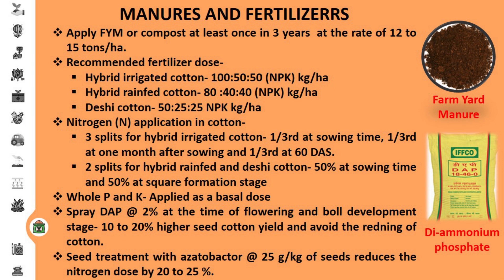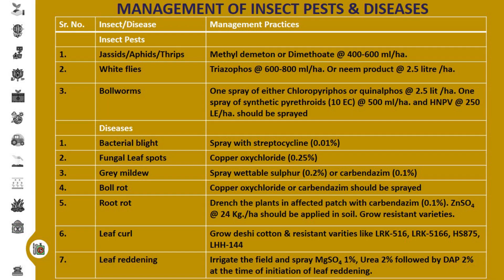In case of insect pest management, the major pests observed in cotton are aphid, jassids, thrips, whiteflies, and bollworm. To control sucking pests, methyl demeton or dimethoate should be applied at the rate of 400 to 600 ml per hectare. To control whiteflies, the crop should be sprayed with triazophos at the rate of 600 to 800 ml per hectare, or sprayed with neem extract at the rate of 2.5 liters per hectare.